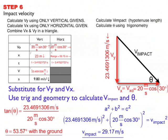So the magnitude of the velocity is 29.17 meters per second. Sometimes the magnitude of the impact velocity is called the impact speed, because speed is a scalar that doesn't have direction. But since we're looking for impact velocity, we also need direction. And the direction is the angle, 53.57 degrees with the ground.